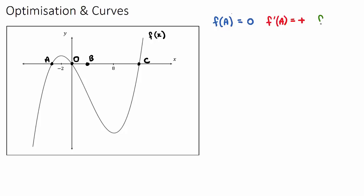Finally, what is f''(A), the second derivative? The second derivative relates to concavity. At point A, is it part of a negative, positive, or zero concavity? Well, looking at the curve here — it is curving down, so it is a negative concavity. We will get some negative value for the concavity at A. Understanding the difference between f, f', and f'' is key to solving these problem-solving questions.